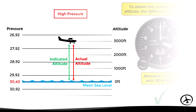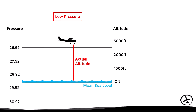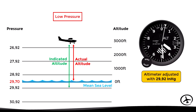On the other hand, the opposite happens if there are lower than standard pressure conditions. In this case, the isobars will move downwards and therefore the pressure at sea level will be lower than 29.92 — in this case, it is 29.70.